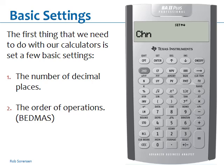The Set button is behind the Enter key, so you go Second then Set and it switches to AOS. If you want to put it back for some reason, go Second Set again — back to Chain mode. Second Set again — AOS. AOS stands for Algebraic Operating System, which is the same thing as BEDMAS.